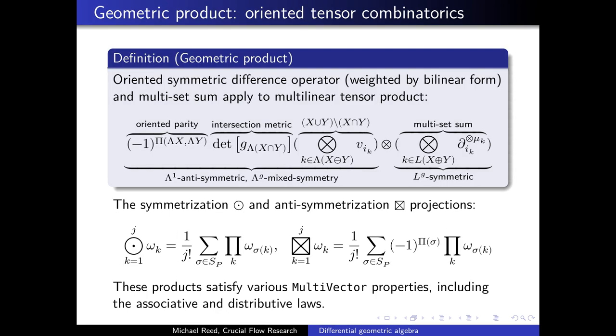The geometric product is a generalization of the standard multiplication of complex numbers and quaternions. It works by keeping track of the orientation of the indices and their cancelling in the associative and distributive multiplication of the indices. This immediately gives rise to symmetrization and anti-symmetrization projections, which is simply an averaging operation over all the permutations that the product can be.